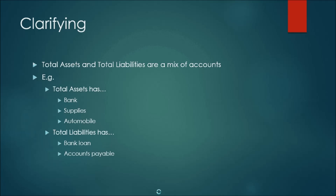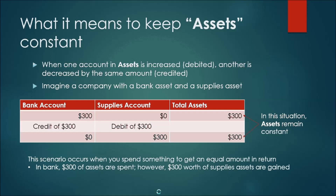When one account in the assets is increased or debited, another is decreased by the same amount or credited. Imagine a company with a bank asset and a supplies asset. Originally the company had $300 in its bank account and $0 in supplies. It spends — credits — $300 from the bank, making it $0, and there's a debit or increase of $300 in the supplies account. Notice that the total assets is still $300, so the total asset value remains constant. You spend money to gain, and this occurs when you spend something to get an equal amount in return.